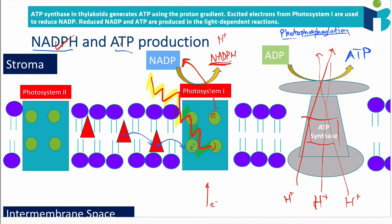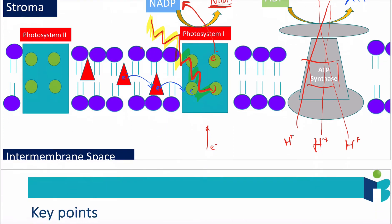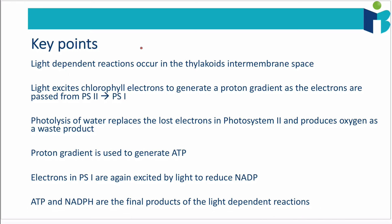The final products of the light dependent reactions are NADPH (reduced NADP) and ATP. To summarize the key points: light dependent reactions occur in the thylakoid intermembrane space (also called thylakoid space); light excites chlorophyll electrons to generate a proton gradient as electrons pass from photosystem 2 to photosystem 1; photolysis of water replaces lost electrons in photosystem 2 and produces oxygen as a waste product; ATP is made via photophosphorylation; and electrons in photosystem 1 are excited again by light to reduce NADP. In the next video we'll cover the light independent reactions.